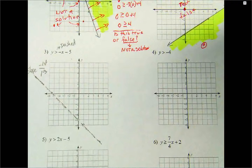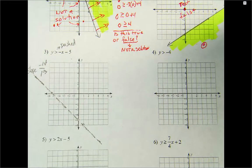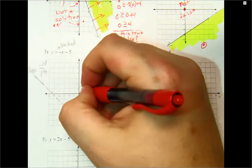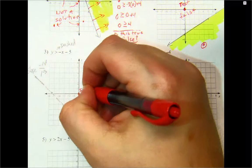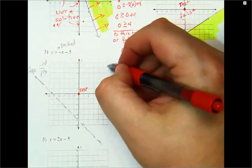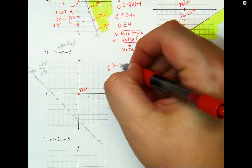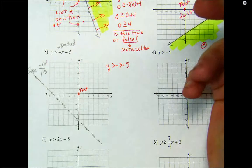All right, what test point are we going to use? All right, so I'm going to take y is greater than negative x minus five, put in zero.